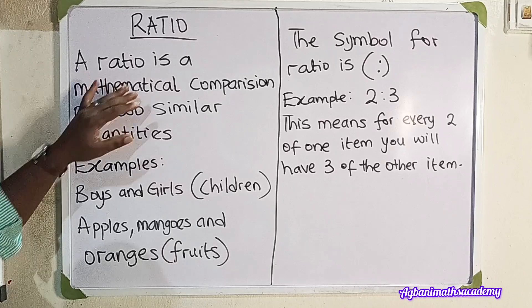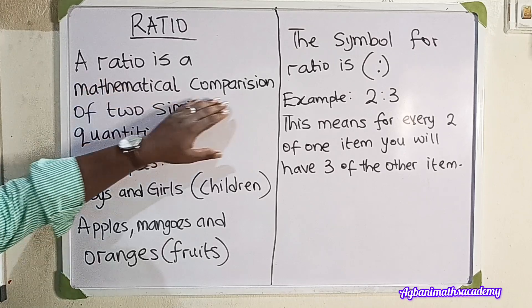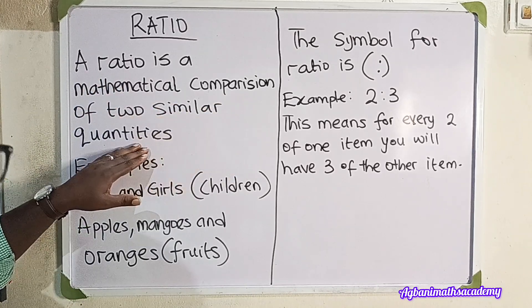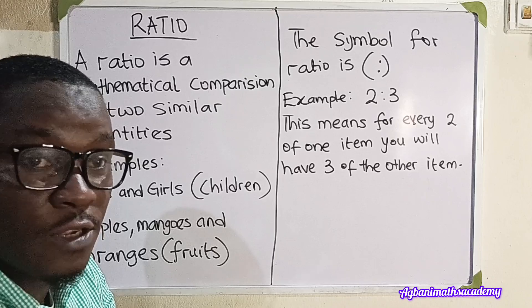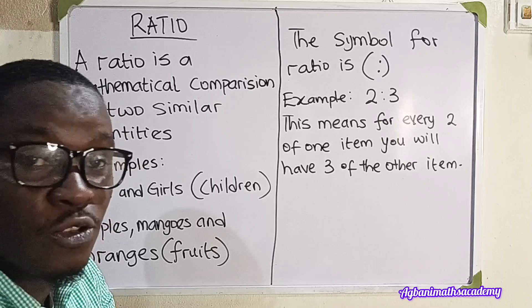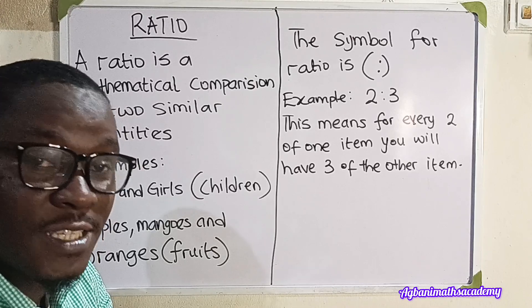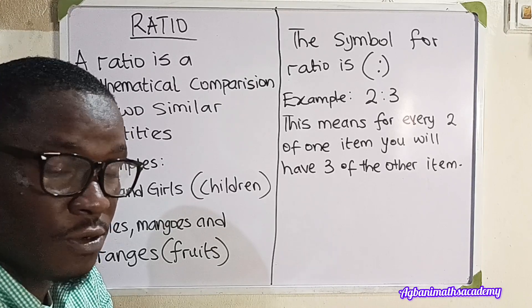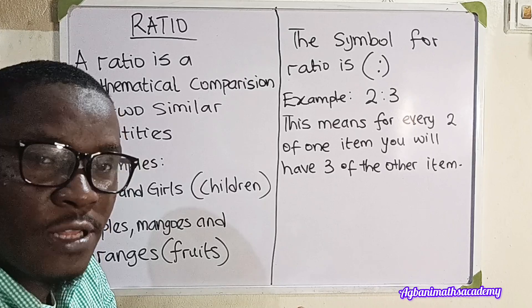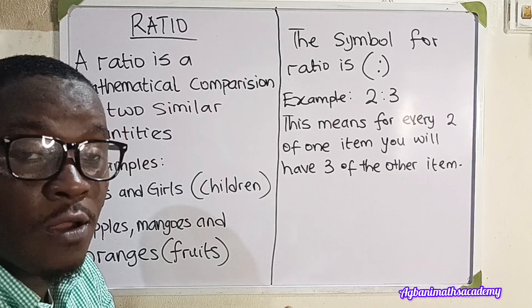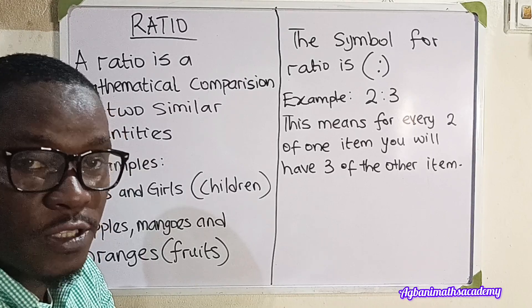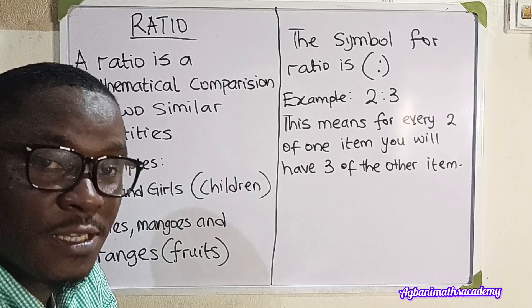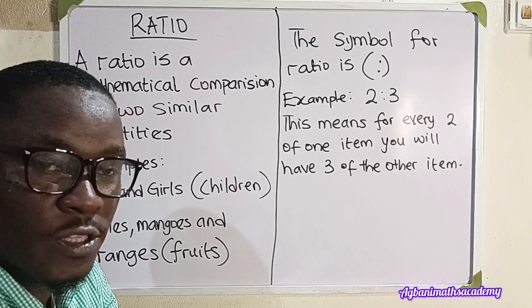A ratio is a mathematical comparison of two similar quantities. Whenever you are solving an equation comparing two quantities that are similar, then you're dealing with ratio. There are other mathematical concepts where you can compare different quantities, but for ratio, we are comparing similar quantities.